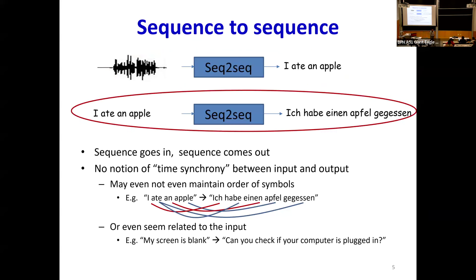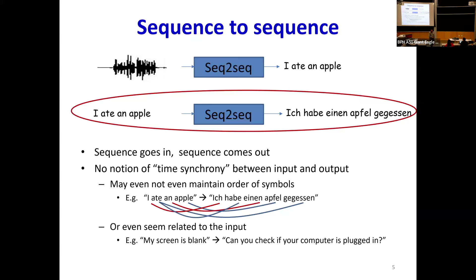This one is more challenging. Not only is there no restriction on the length of the output, the length of the output may be more than the length of the input. There is no clear correspondence between the output and the input. In a machine translation problem, 'I ate an apple' could become a German sentence — just to illustrate that 'I' maps to 'ich', but the order on the output is not the same as the order of the input. Or consider a dialogue system: 'My screen is blank' goes in, and the response could be 'Can you check if your computer is plugged in?' There is no apparent correspondence. So how do we deal with these problems?